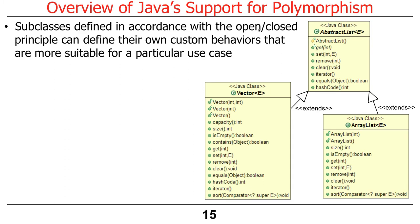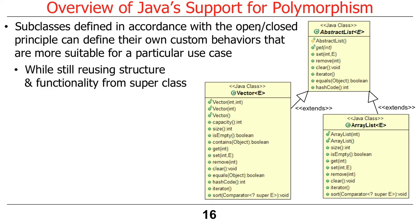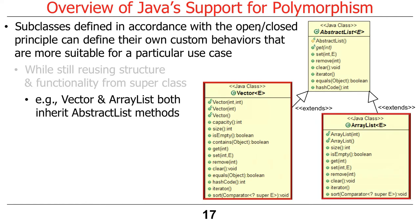If you define your class hierarchy using the open-closed principle, you end up with subclasses that can define or redefine their custom behaviors that are more suitable for particular use cases. The neat part is you can still have the same structure and functionality from the superclass, but then you customize the places where differences occur.